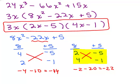If we had not factored out that 3x first, this would have been a hard problem. So always take out the greatest common factor before you try factoring the trinomial.